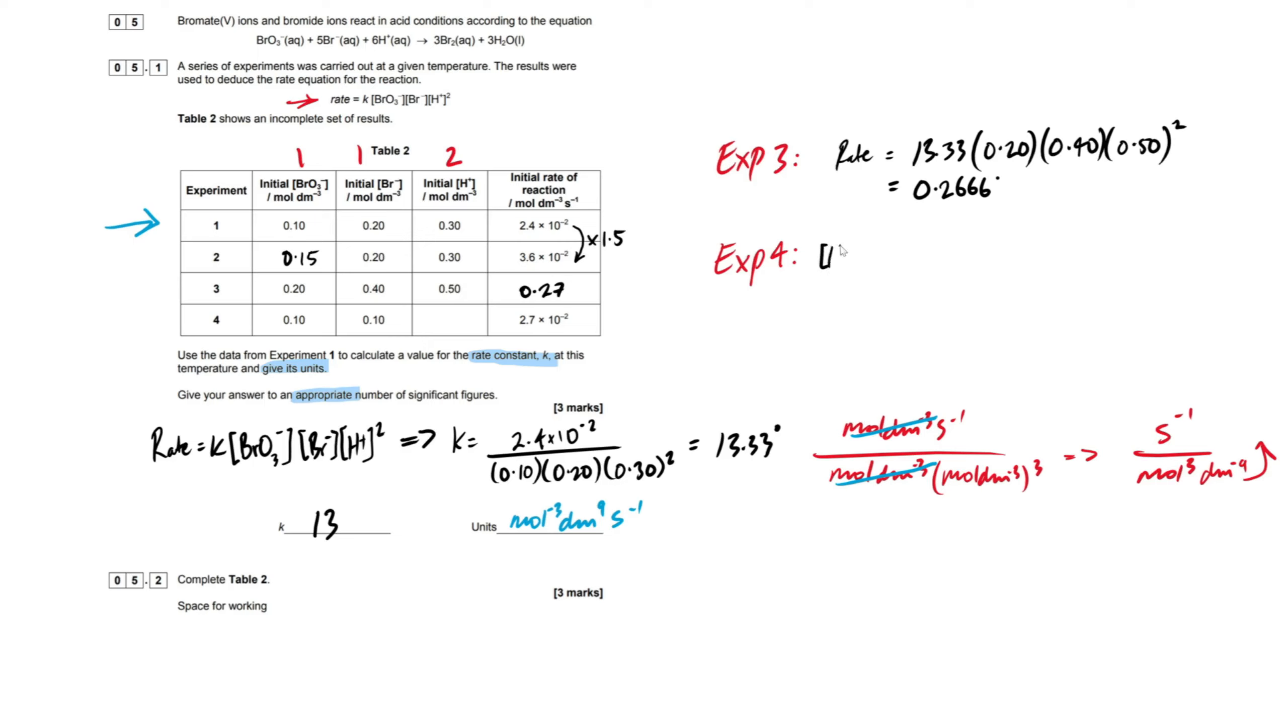So if I write this out then, our concentration of H plus is going to be our rate, which they've given us to 2.7 times 10 to the minus 2. Then we're going to divide that by everything else. So it's going to be divided by our k, 13.33, times by our concentration of bromate, 0.1. Let's bracket these up just in case. You don't really have to, but I like to separate everything out when I'm teaching stuff. And then next up is just, again, 0.1. So easy as that, guys. Now, because we're looking for this and ultimately it was squared, we have to square root everything. So plug that in your calculator and you should get an answer of 0.450. So two sig figs again, going to be 0.45.